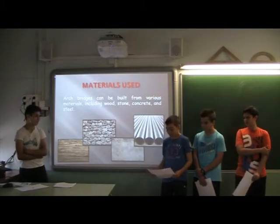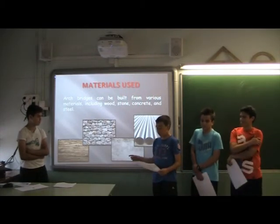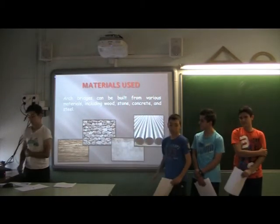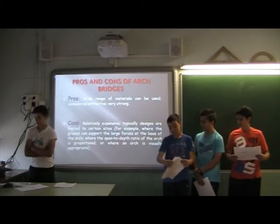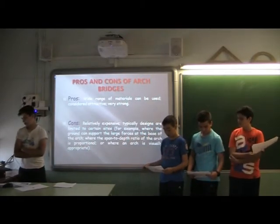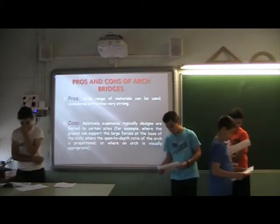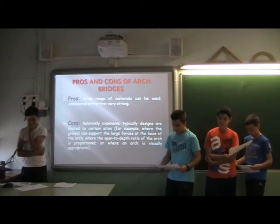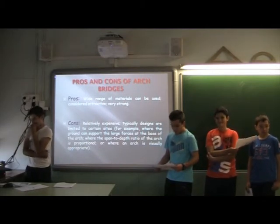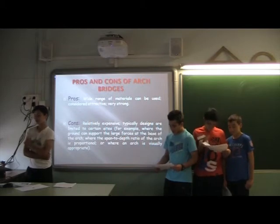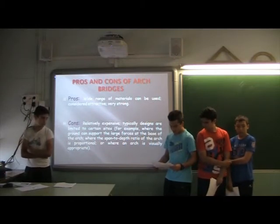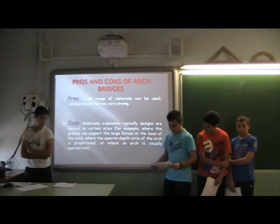Materials used: arch bridges can be built from various materials including wood, stone, concrete, and steel. The advantages of arch bridges are that a wide variety of materials can be used, they are craft-free and very strong. The cons are that they can be expensive, and designs are limited to certain shapes — for example, where the rock can support the large forces at the base of the arch, where the span-to-depth value is proportional, or where an arch is usually abutted.